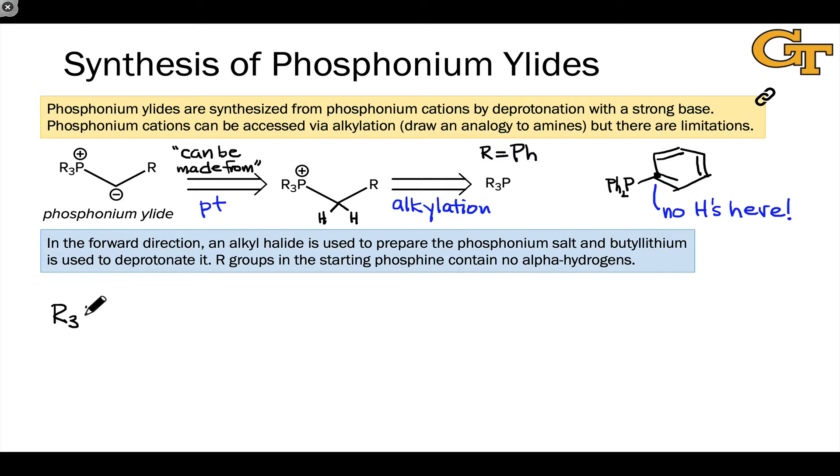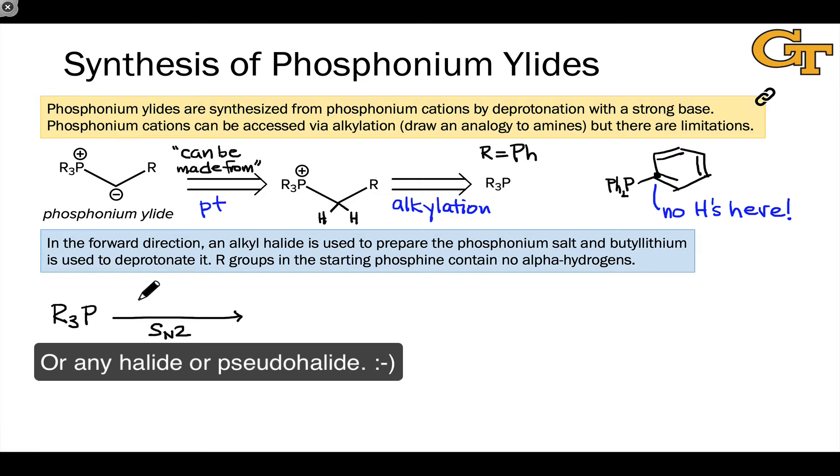If we start with a phosphine, and we want to add an alkyl group to it through an SN2 process, we have to use some kind of alkyl bromide. But we can't use any old alkyl bromide. We have to use one that's amenable to SN2 substitution. That typically means that the electrophilic carbon has to be primary. This carbon has to be amenable to a nucleophilic attack in an SN2 process by the phosphorus atom.